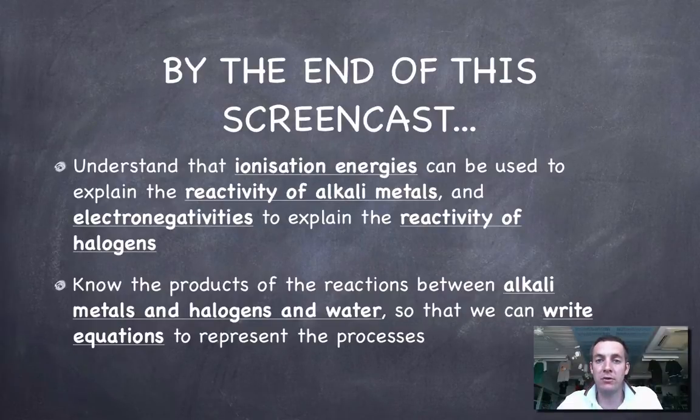What we're going to try and do now is use ionization energy and electronegativity to explain how the reactivity of alkali metals and halogens varies as we go from one element to another in their groups. We'll also be able to write equations for these reactions - when we put alkali metals in water and when we react alkali metals with halogens.